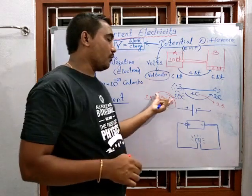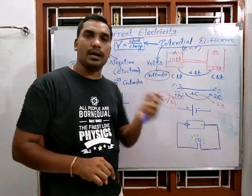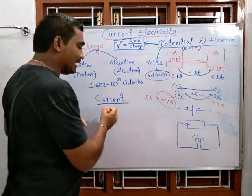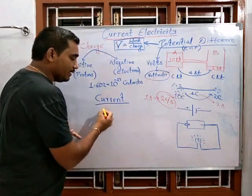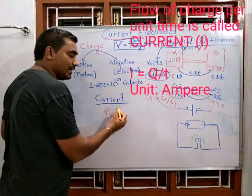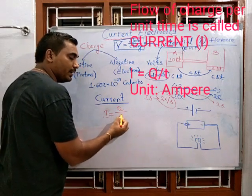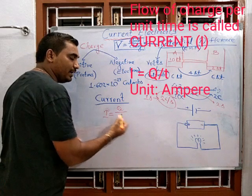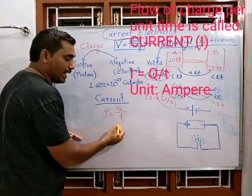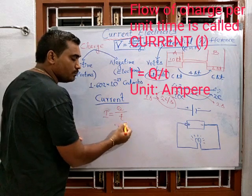This rate of flow of charge is called current. Current is equal to the charge flowing divided by the time taken, and the unit of current is amperes.